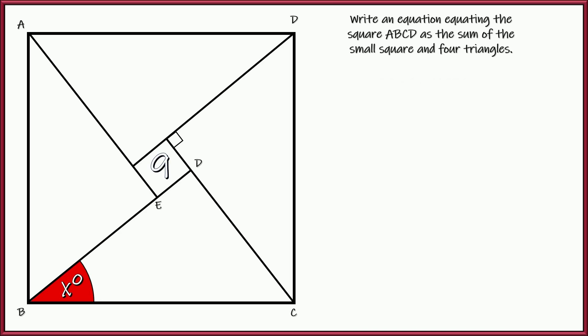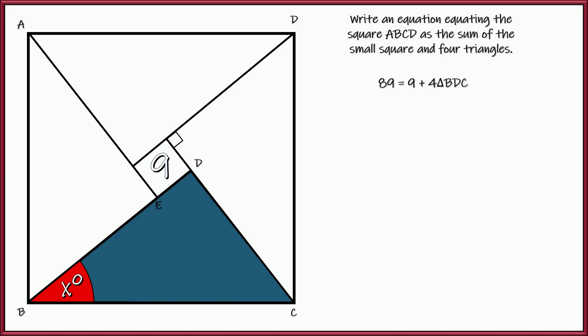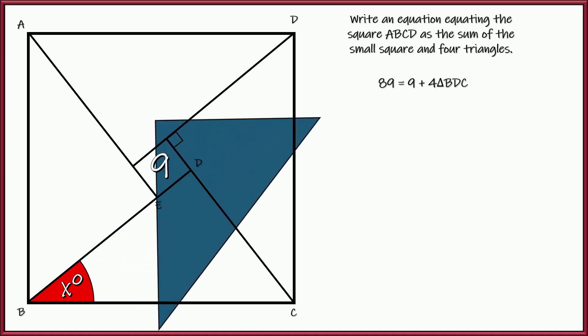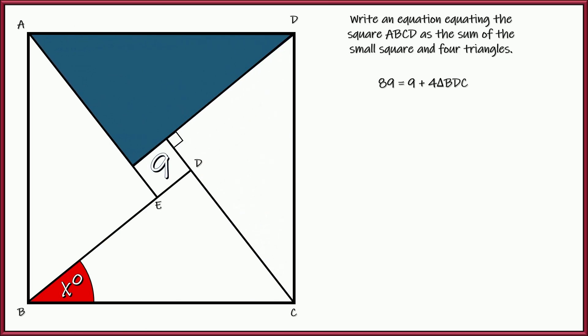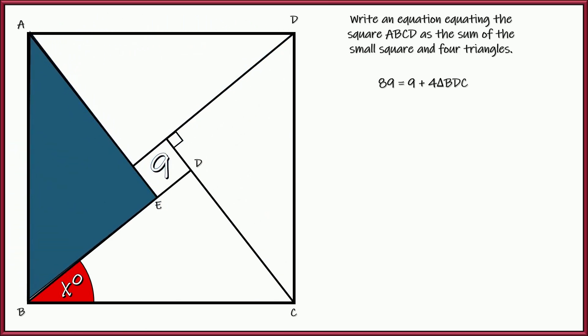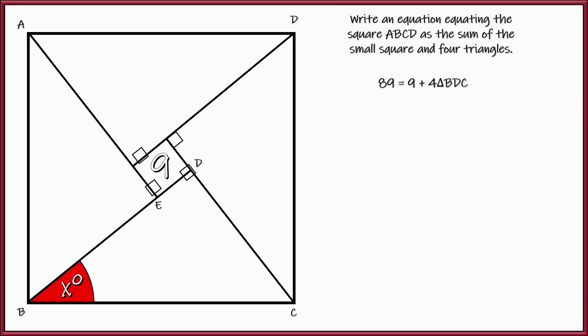All right. So writing the equation for the square ABCD, the square is 89. So that would be 9 plus these four triangles like this one right here, BDC. Now, they do all look the same, but let's not make assumptions like that because that's where we get into trouble. It might seem fairly obvious, but let's go ahead and state it just to make sure.